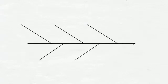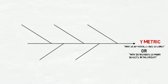Start by placing the Y metric, the effect, at the head of the fishbone skeleton in the form of a question. For example, your team may ask, Why do approvals take so long? Or, Why do we have so many defects in the order?